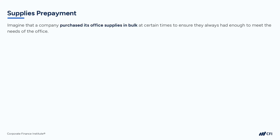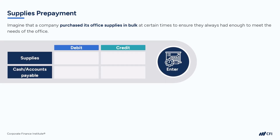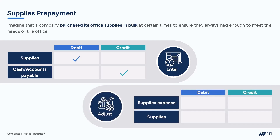Let's turn to another example of a prepaid expense. Suppose a business purchases office supplies in bulk at certain times of the year to ensure they always have enough to meet the needs of the office. Just like insurance policies, there is a future economic benefit associated with those supplies stored in the office still waiting to be used. Since the supplies have not yet been consumed, they can't be recorded as an expense when they were just purchased. So when purchases are made, we would record a debit to supplies — an asset account — and a credit to cash or accounts payable. When the supplies are used up, we would record a debit to the supplies expense and a credit to the supplies asset account, thereby reducing our asset and showing it on the income statement as an expense.